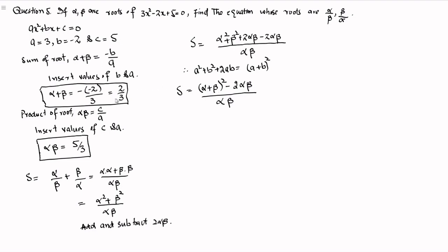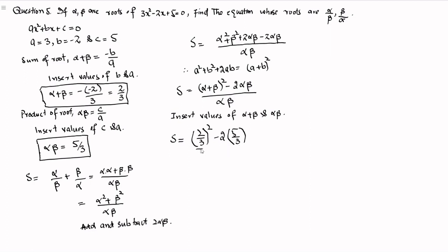We have the value for alpha plus beta which is 2 by 3, and the value for alpha beta which is 5 by 3. Inserting these values, S equals 2 by 3 whole squared minus 2 times 5 by 3, all divided by 5 by 3.